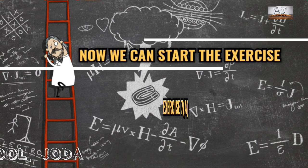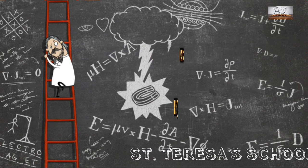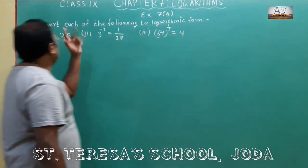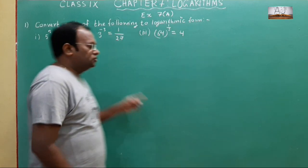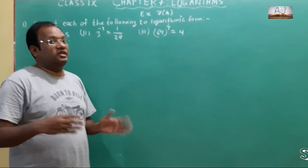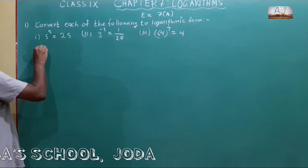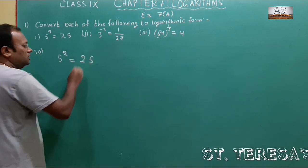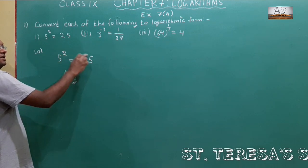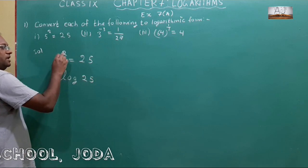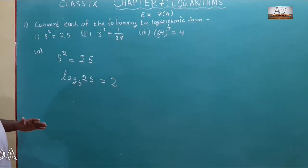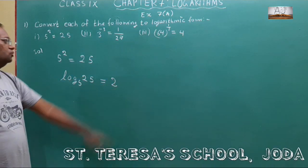Now let us start Exercise 7A. The first question is: convert each of the following to logarithmic form. Here the exponential form is given and we have to convert it into log form. So the first one: 5 to the power 2 is equal to 25. We have to convert this into log form. So log 25 to the base 5 is equal to 2.